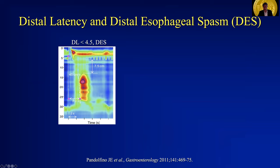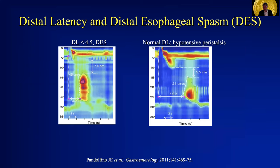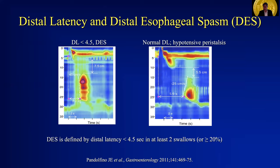This looks like a simultaneous contraction, and indeed it is. But it is not to be confused with one like this, where you have a very large peristaltic break — the primary problem there — but the distal latency is actually 5.9 seconds, so that's normal. So this is actually a fragmented peristaltic segment, not a premature contraction. That changes the definition of distal esophageal spasm somewhat, in which distal esophageal spasm — what used to be known more commonly as diffuse esophageal spasm — is now defined by a patient who has a distal latency of less than four and a half seconds in at least 20% of their swallows during the study.